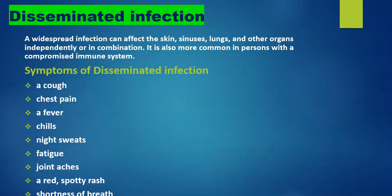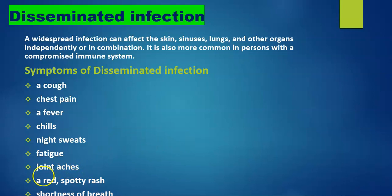Disseminated infection is also more common in persons with a compromised immune system. The symptoms include cough, chest pain, fever, chills, night sweats, fatigue, joint pain, a red spotty rash, and shortness of breath.